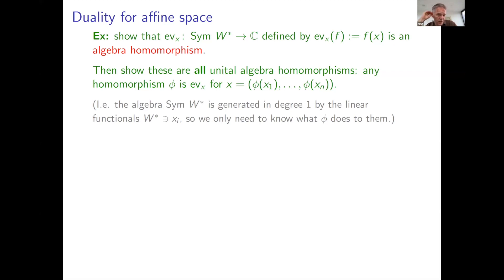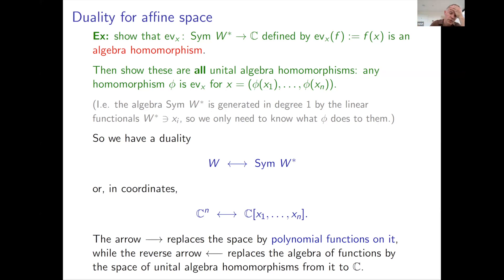What this comes down to is the fact that since the symmetric algebra is generated by its degree-one part, we only really need to know what happens on the degree-one part, and then it just reduces to the vector space exercise we did earlier. What we find is the duality between the geometry of this space W, considered as an affine space, and the algebra of functions on it, which is the symmetric power of the dual space. In coordinates, it's just a duality between C^n and polynomials in n basis functionals. Going left to right replaces a space by polynomial functions on it; going right to left replaces a ring by the space of unital algebra homomorphisms from that ring to C.